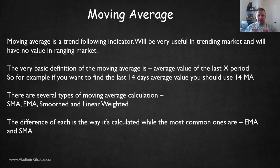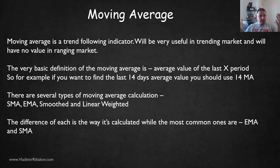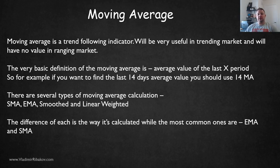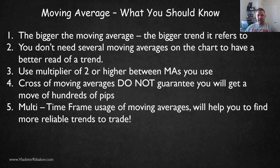The very basic definition of the moving average is the average value of X periods. So if you want the average value of 14 days, you would want to use moving average 14. There are several types of moving average: SMA (simple moving average), EMA (exponential moving average), smooth and linear weighted moving average. They all are moving averages, but the mathematical calculation is slightly different between them. The most common ones are EMA and SMA.